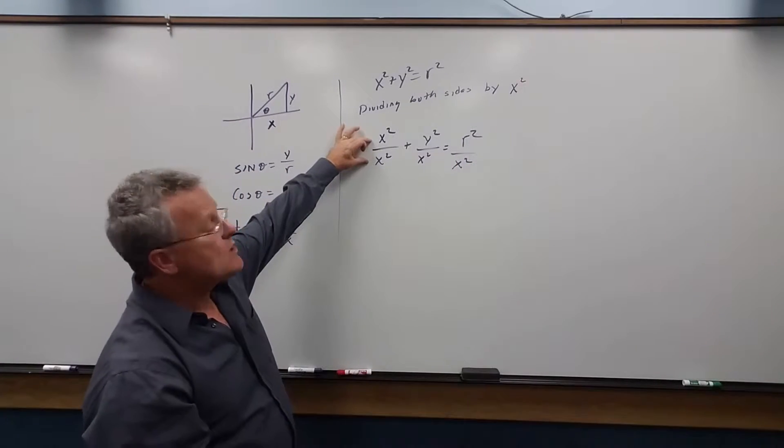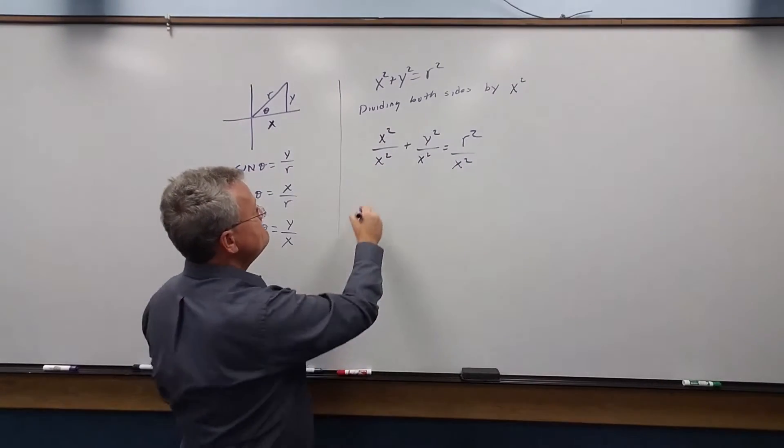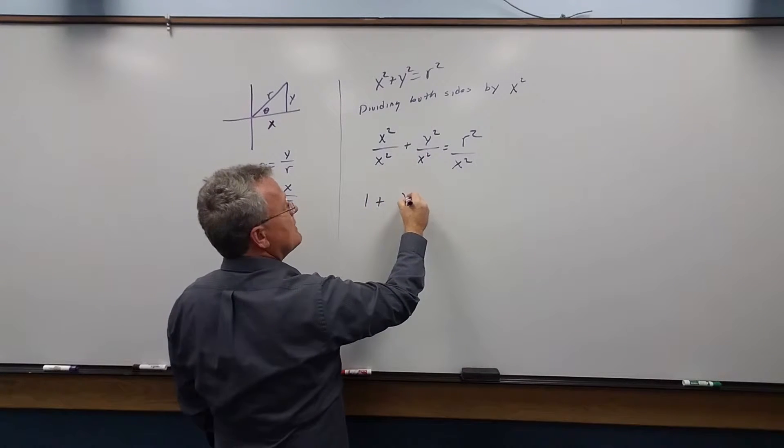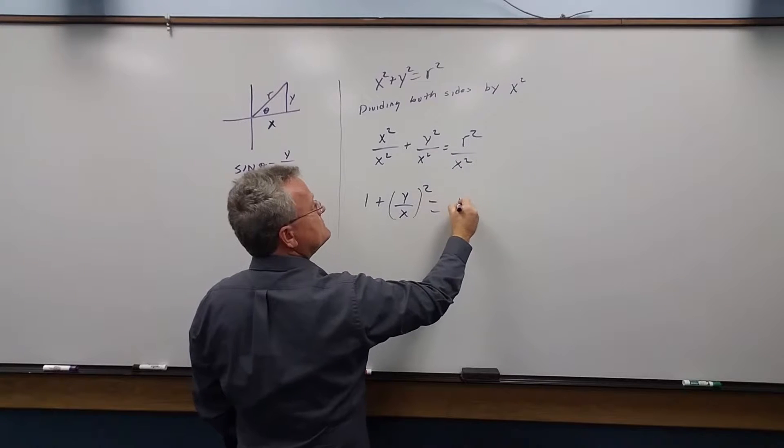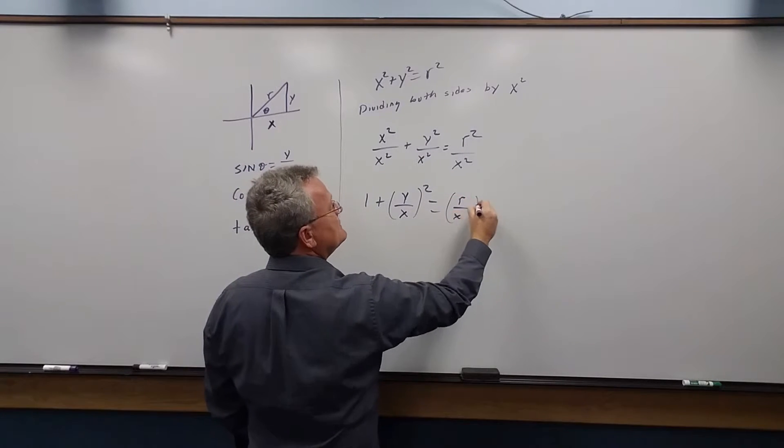Well again, any quantity over itself is 1. This we can write as y over x quantity squared, and this is equal to r over x quantity squared.